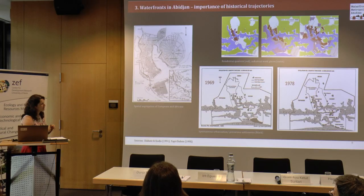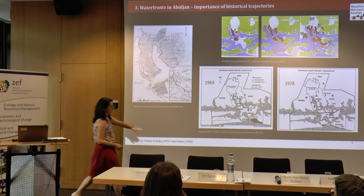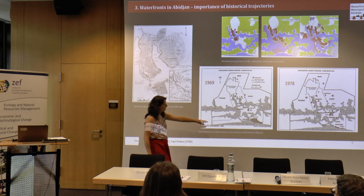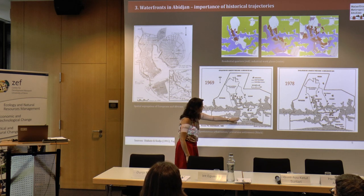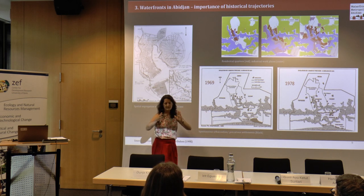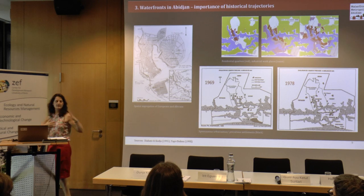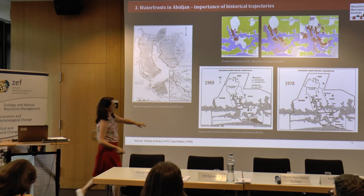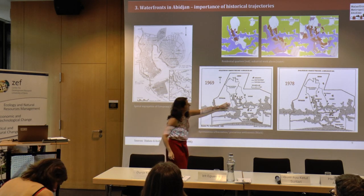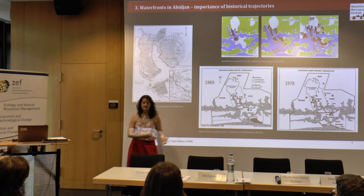A port was established first by the Atlantic. Then in 1951 they built a canal — the Vridi Canal — and shifted the port to that area. But there was always a large segregation distance between the colonial city, the residential quarters of the workers, and the workplaces.